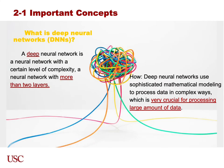Another important concept I want to explain is what is Deep Neural Networks, short for DNN. A Deep Neural Network is a neural network with a certain level of complexity — a neural network with more than two layers. Deep Neural Networks use sophisticated modeling to process data in complex ways, and are very crucial for processing large amounts of data.